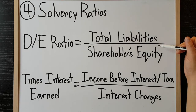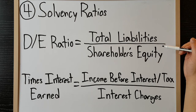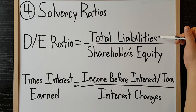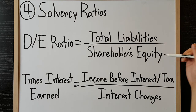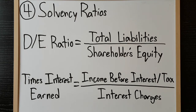The debt-to-equity ratio assesses a company's capital structure by measuring the proportion of debt held relative to equity. This ratio is often restricted through debt covenants when a company borrows money. Lenders do not want a company to take on too much additional debt because it reduces the likelihood that they will get their money back.